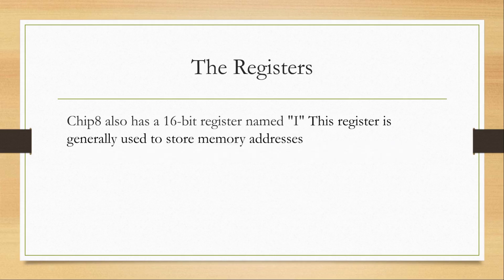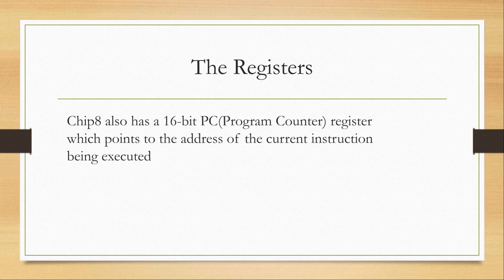The Chip 8 also has a 16-bit register named I, which is generally used to store memory addresses — separate from the 8-bit data registers. Chip 8 also has a program counter whose job is to point to the memory address of the instruction currently being executed. When ready to go to the next instruction, you increment the program counter by 2 bytes. Instructions in the Chip 8 are 2 bytes in size, which is the reason for incrementing by 2.